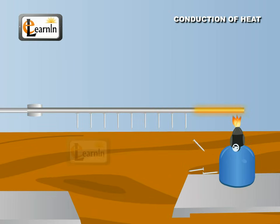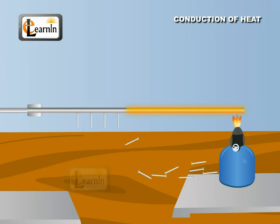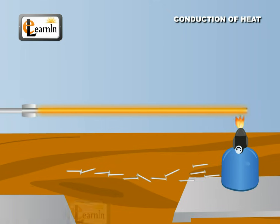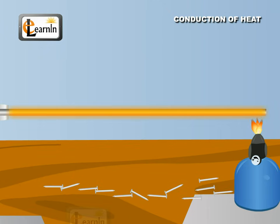The nail near the spirit lamp falls down first, followed by its nearest neighbor, and so on. The one near the stand falls down last. The heat supplied by the spirit lamp flows to the other end of the rod by conduction.